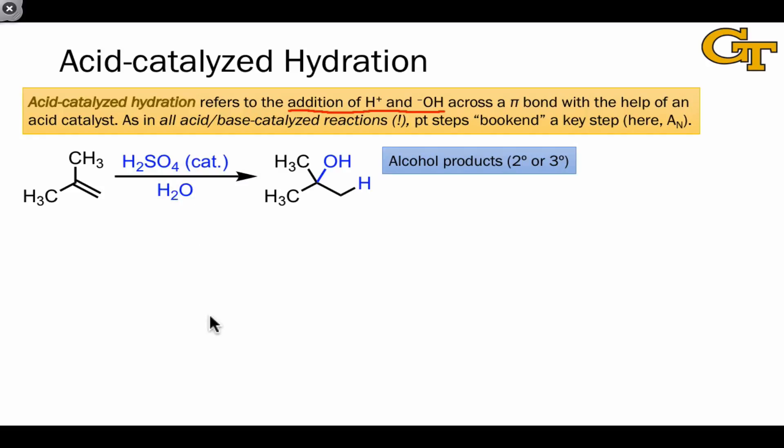The products of this reaction are alcohols. And here again, as we saw in hydrohalogenation, the hydroxyl-bearing carbon in the product must be secondary or tertiary since a carbocation intermediate is involved.